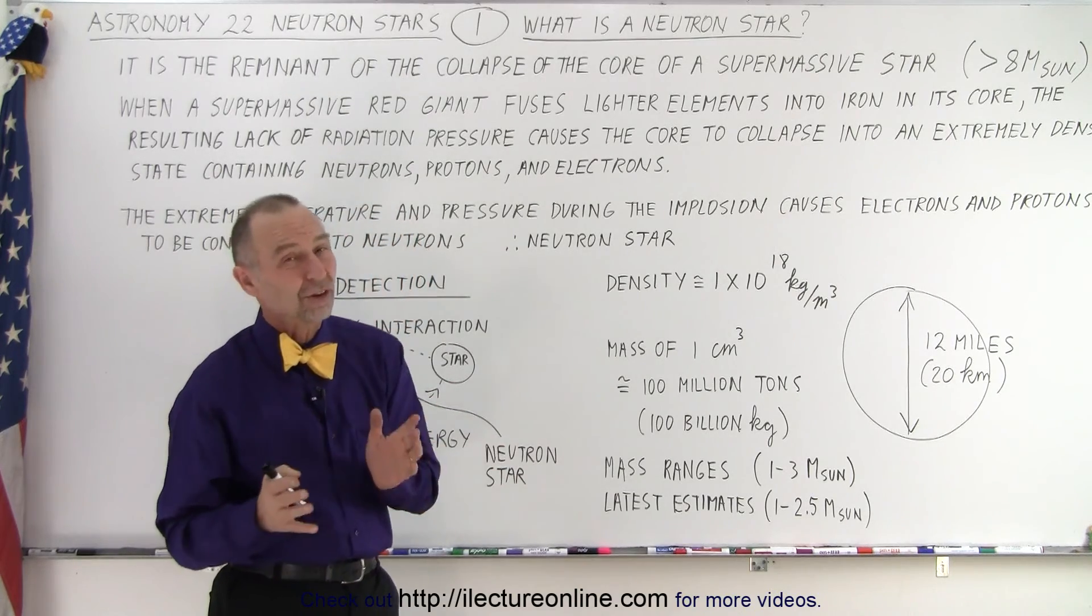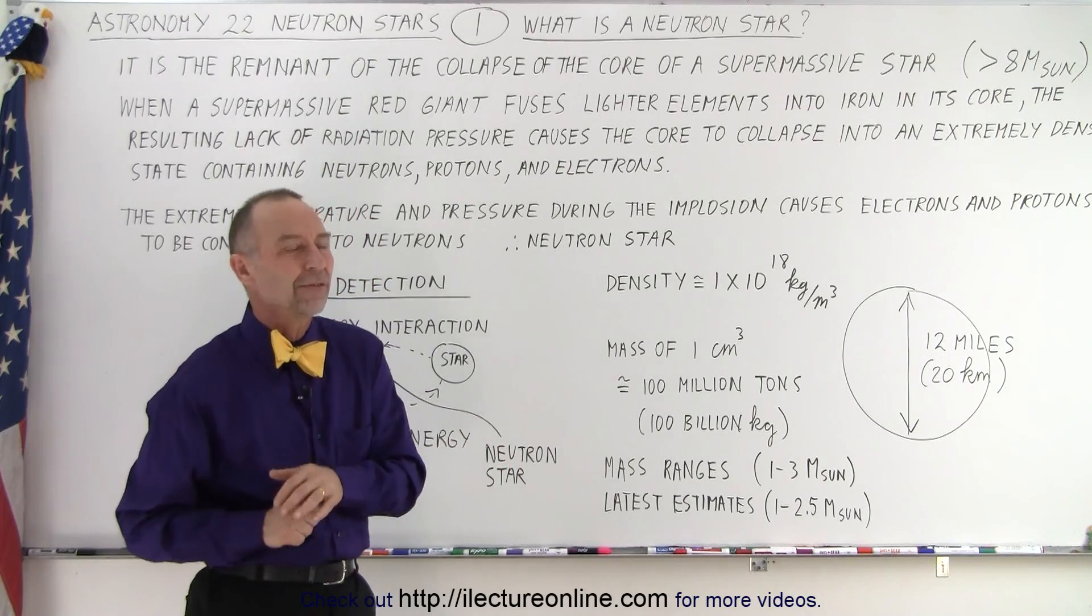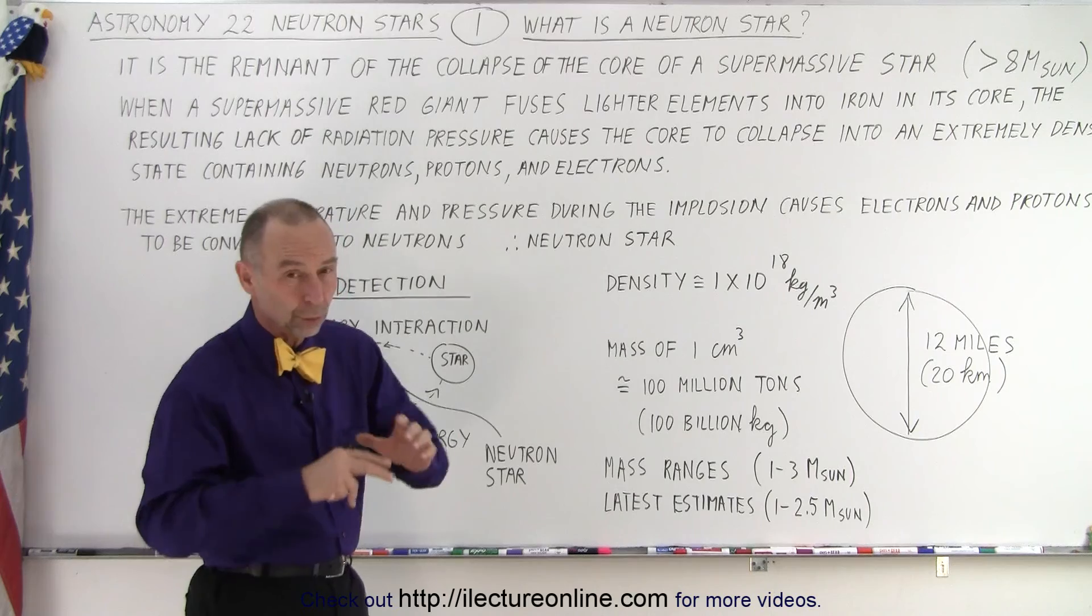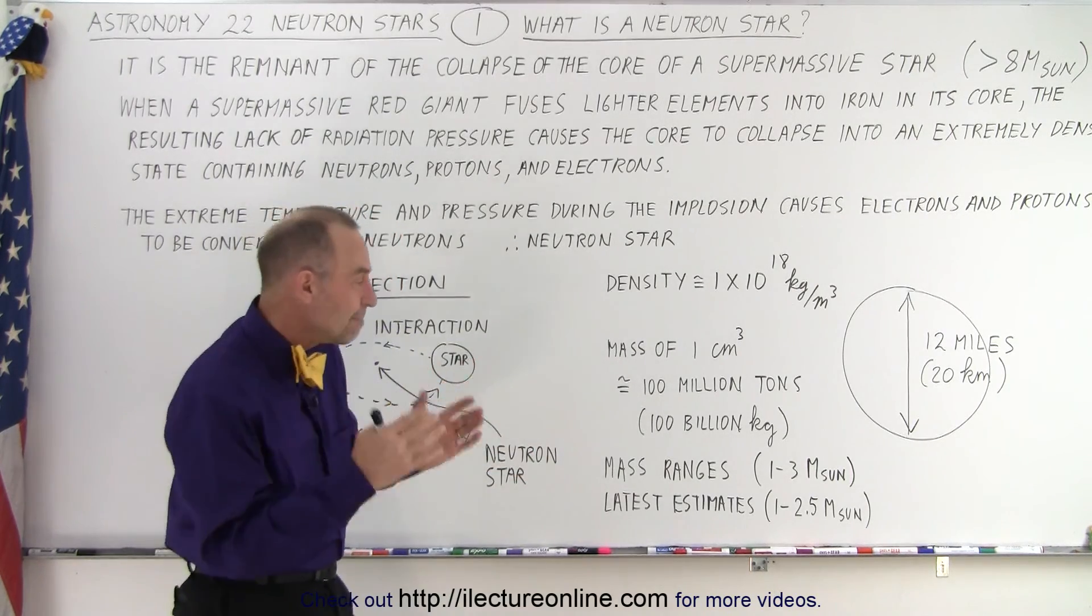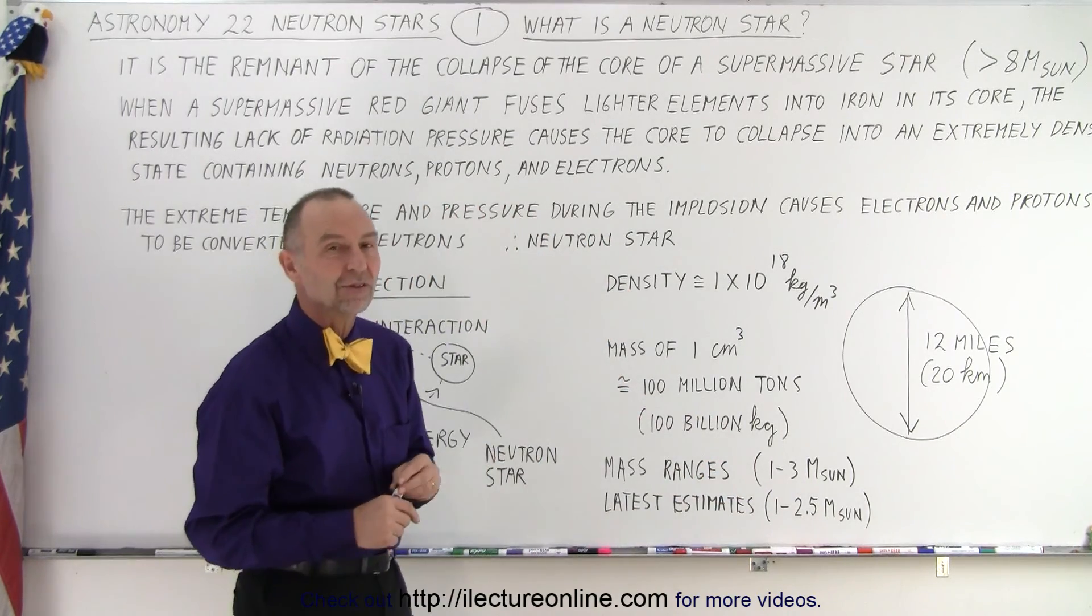The total mass of a neutron star varies anywhere from 1 to 3 times the mass of the sun. Now, that's an older standard, an older unit that you'll see, or an older estimate, I should say, that you'll see in older textbooks. More recently, the mass limit has been dropped down to about 2.5 times the mass of the sun.